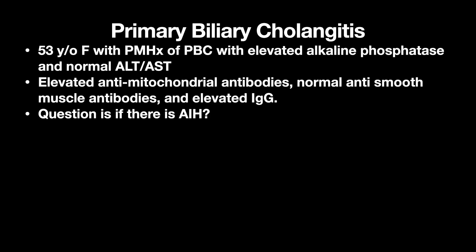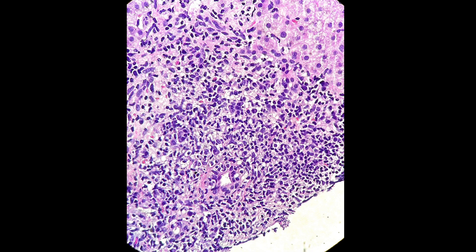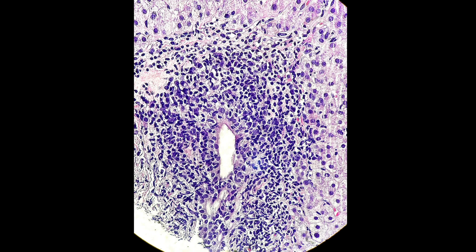This is a case of a 53-year-old female with a prior history of PBC, elevated ALK-phos, normal ALT and AST, elevated anti-mitochondrial antibodies, normal anti-smooth muscle antibodies, and elevated IgG. Given the elevated IgG, there's a question of whether there's an element of AIH. We can see inflammation in the zone 1 portal tracks. Looking closer, there are histiocytes, making this a predominantly lymphohistiocytic inflammation. You can have plasma cells and some eosinophils. But the bile ducts are being attacked by histiocytes and lymphocytes — here it's hard to distinguish what is bile duct epithelium and what is inflammatory cells.